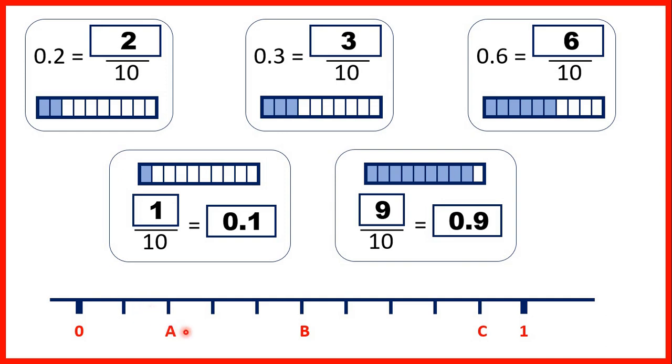So the value of A is two tenths or 0.2, because A was one, two lines along. B is five lines along, so that's five tenths or 0.5. And C is nine lines along, so that's 0.9.